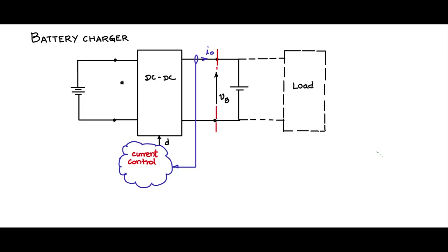A very common and popular application of DC-DC converters is in battery charging. Battery chargers are made of switched mode DC-DC converters. Here is the battery which needs to be charged, and that battery will be used to drive some load. This battery is interfaced through a DC-DC converter with some DC source.